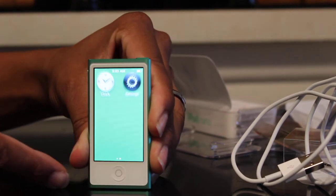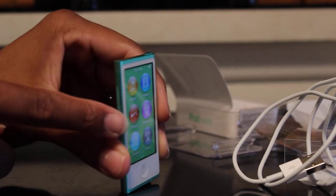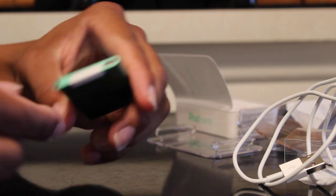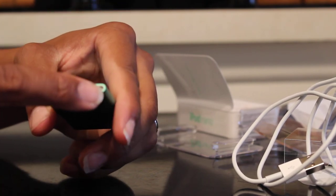Here's the home menu. Press that to get back there. Here's the volume buttons on the side. Here's the power button on the bottom, the headphone jack, and the Lightning connector.